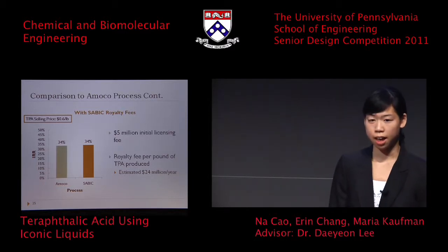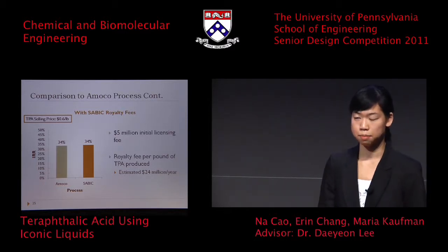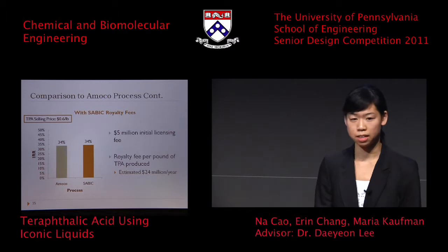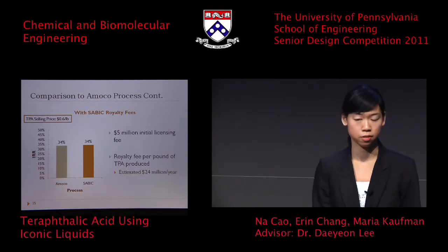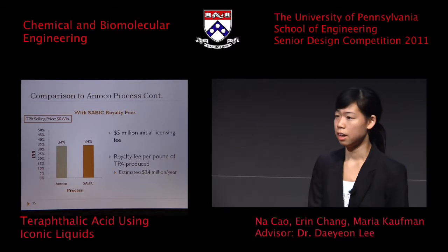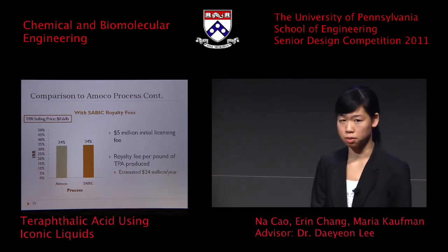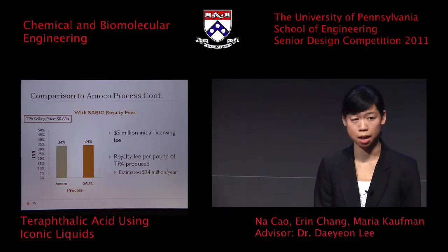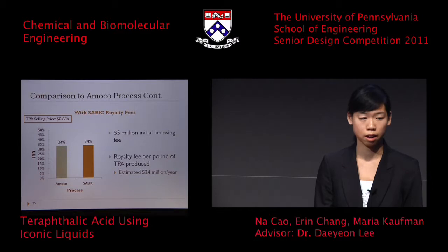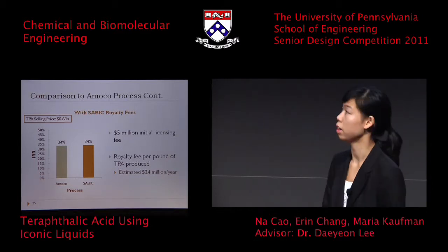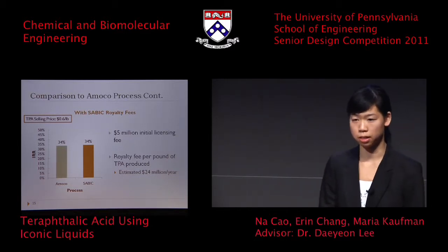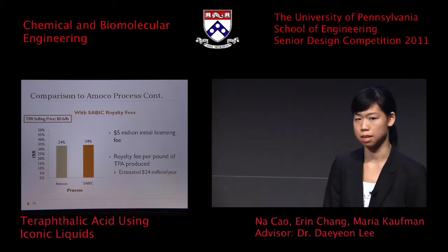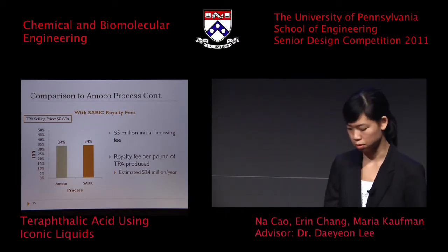It turns out that what's impeding our profitability is the royalty fee we have to pay to SABIC for using their patented material. With the help of our industry consultants, we've assumed we would have to pay around $24 million a year just in royalty fees. As a result, we are currently just competitive using the same pricing scheme, so we would not be able to reduce the price.